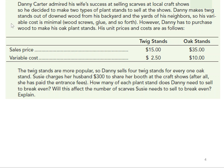Danny makes twig stands out of downed wood from his backyard and the yards of his neighbors, so his variable cost is minimal — meaning wood screws, glue, and so forth. However, Danny has to purchase wood to make his oak plant stand, and his unit prices and costs are as follows. You can see what he sells each item for and the variable cost per unit. The twig stands are more popular, so Danny sells four twig stands for every one oak stand.